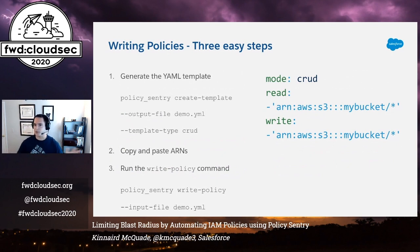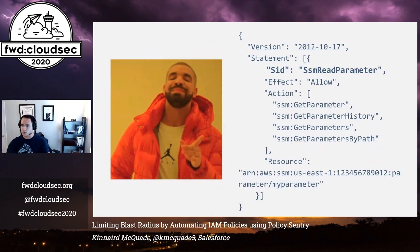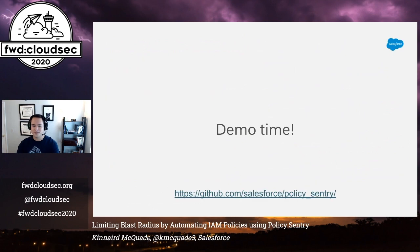We've made the policy writing process super easy — just three steps. Step one, generate the YAML template file. We wrote a create template command to generate that file for you so you don't have to remember the syntax or the structure. Step two, copy and paste Amazon resource names — the IDs that correspond to the resources in your account — into the proper access level. Then you run the write policy command, and it creates the policy for you. The resulting policy sorts each statement block according to access level and resource type and gives you access to all the actions that match them.